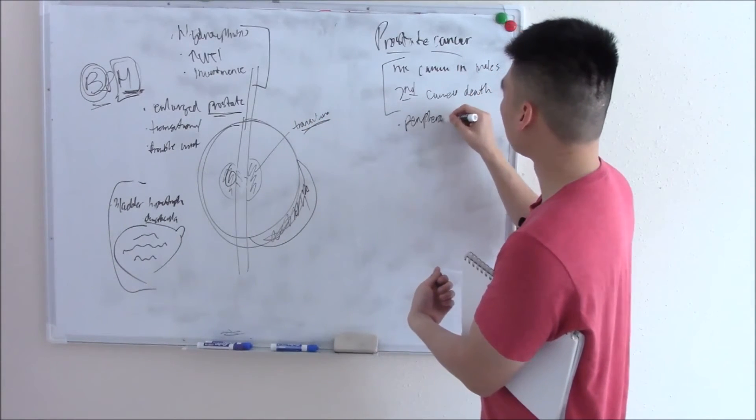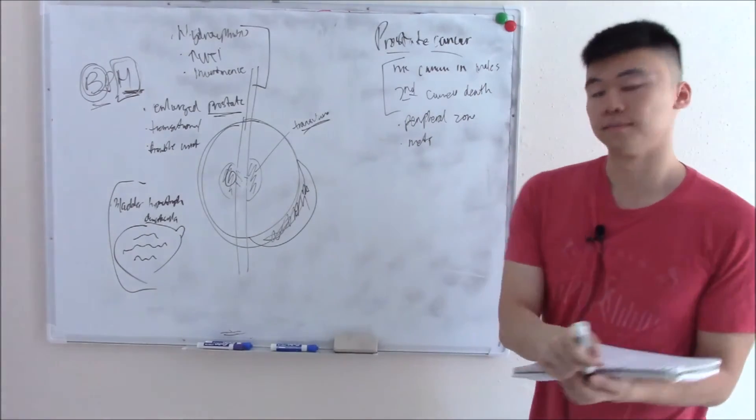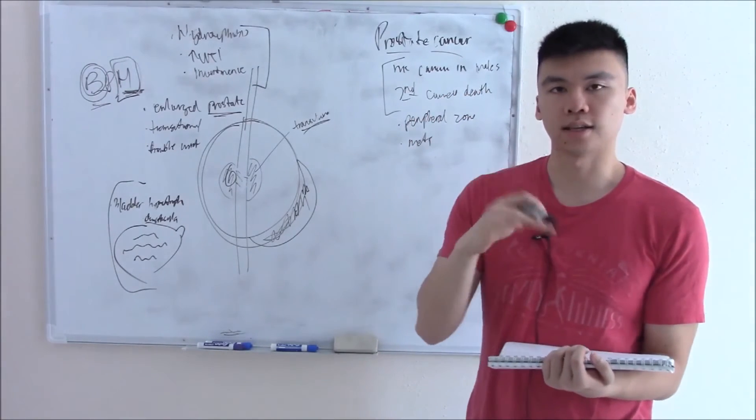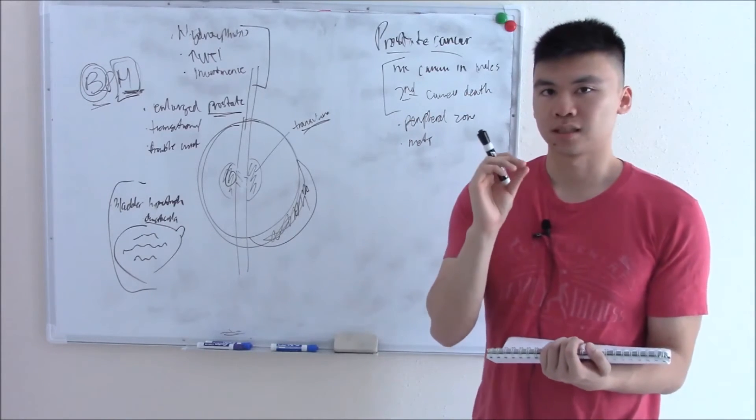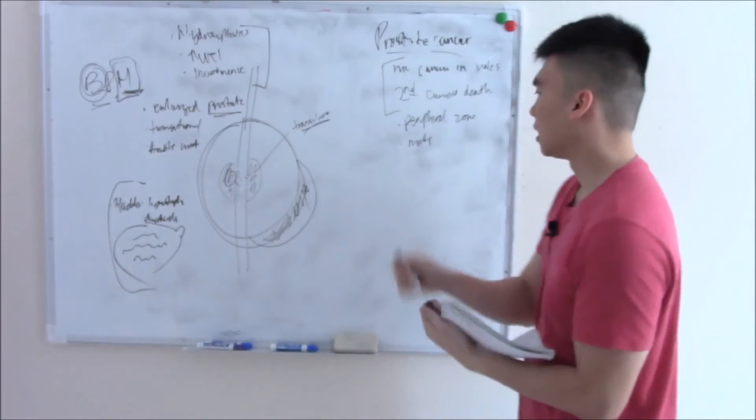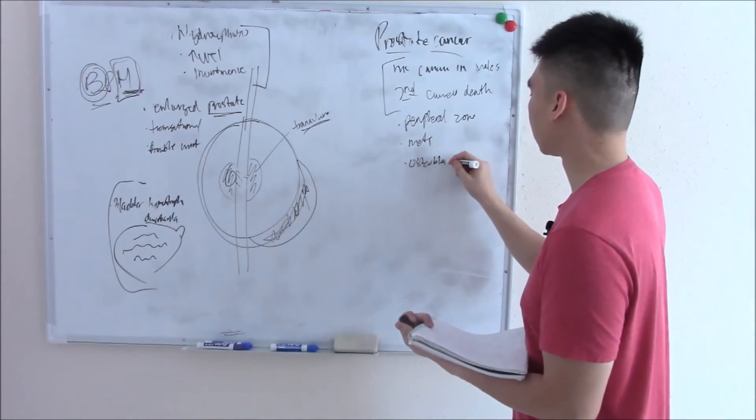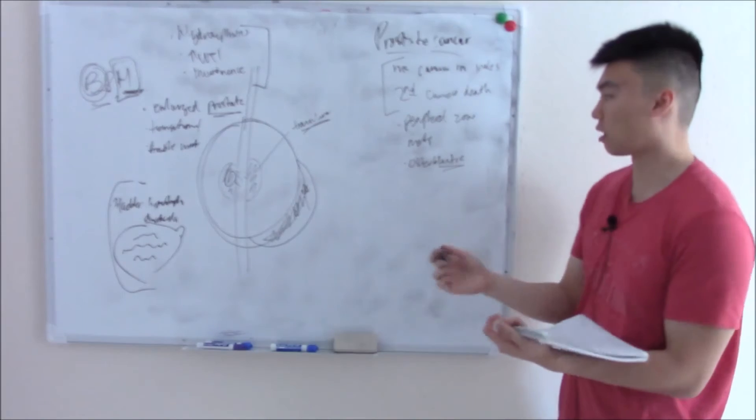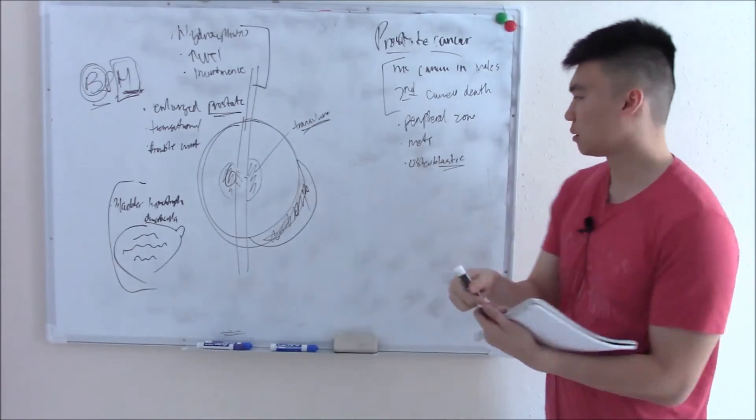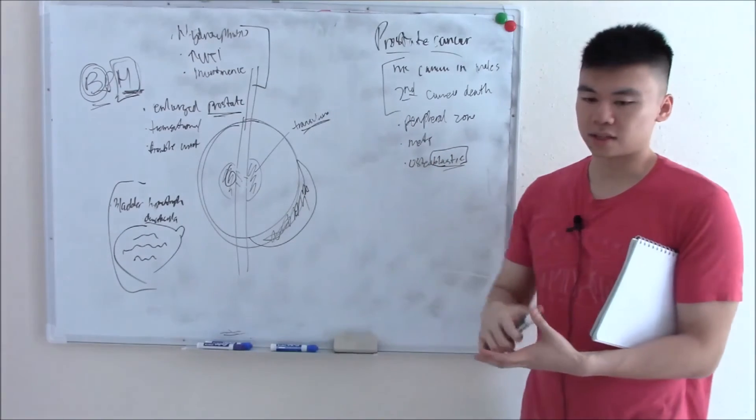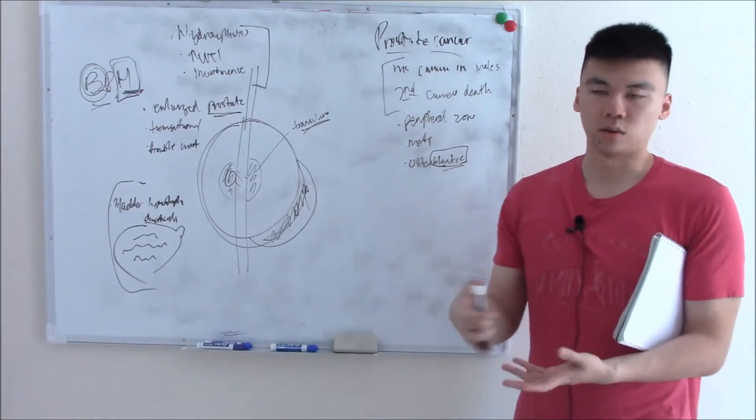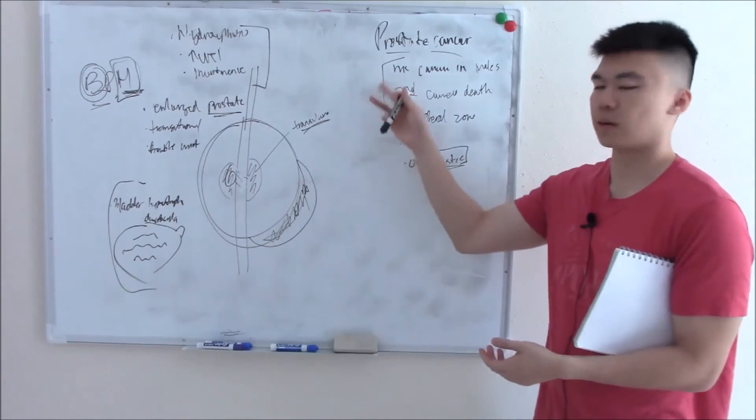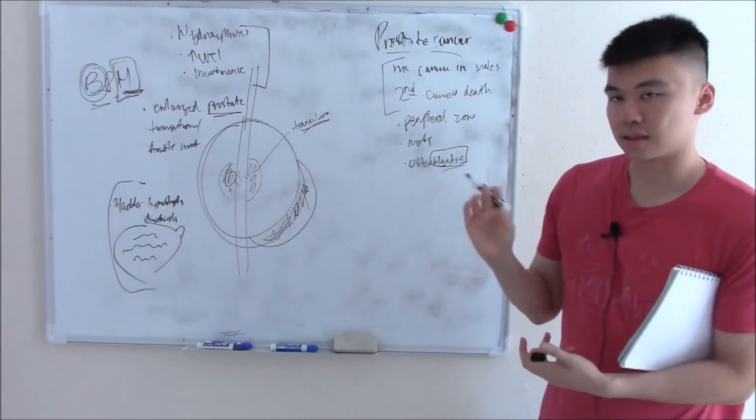It likes to metastasize to bone. The key thing about prostatic mets is that when it goes to bone, it's osteoblastic. It actually causes sclerosis and builds bone, not good bone, but it's osteoblastic. That is very, very key. All other cancers that metastasize to bone (basically all of them) break down bone—they're osteoclastic. This is osteoblastic. If they talk about a patient with cancer constellation and osteoblastic bone mets, they don't need to say more—it's from the prostate. It's that pathognomonic.